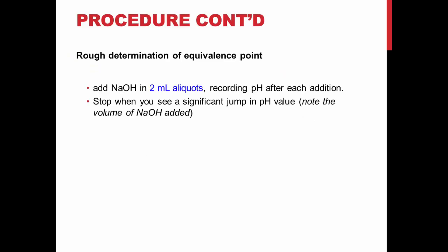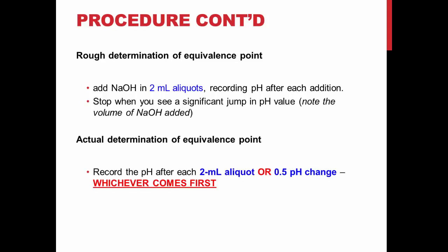Add sodium hydroxide in 2 mL aliquots and record the pH to two decimal places. The pH should be recorded after each addition or after a 0.5 change in pH, whichever comes first.